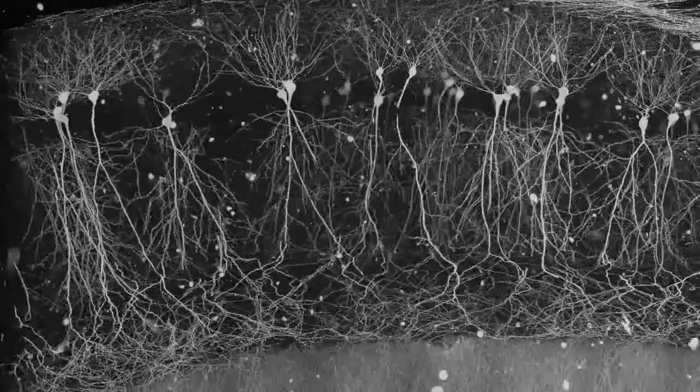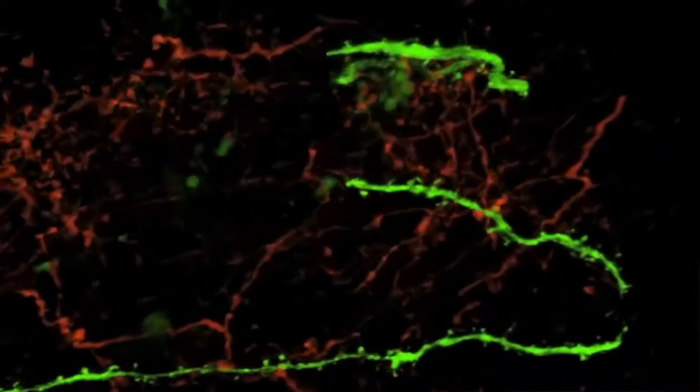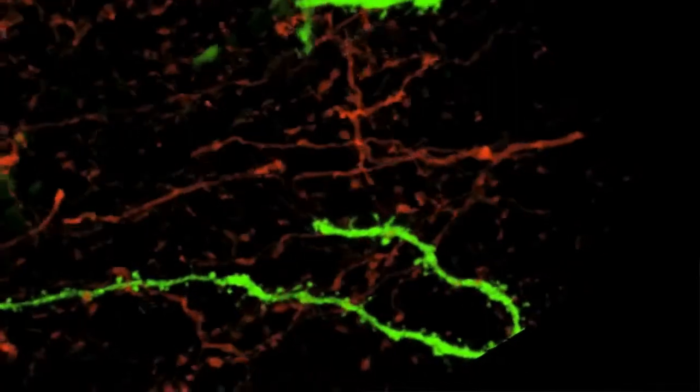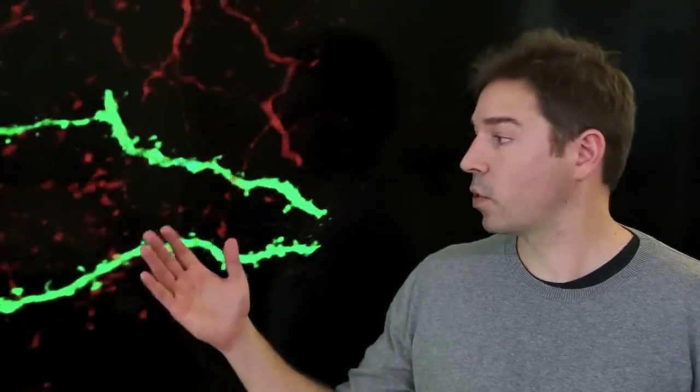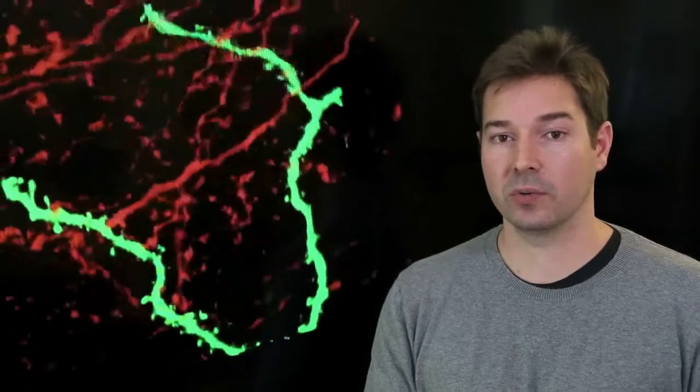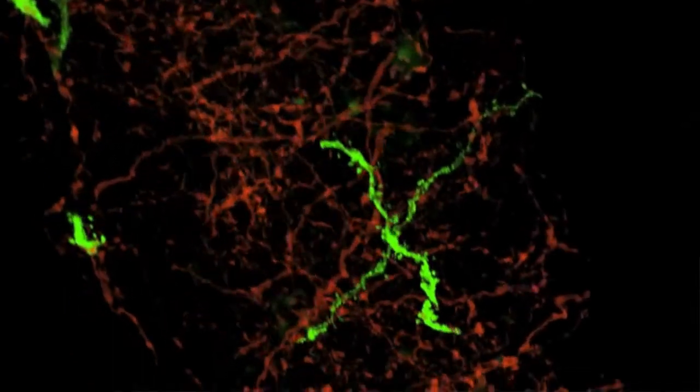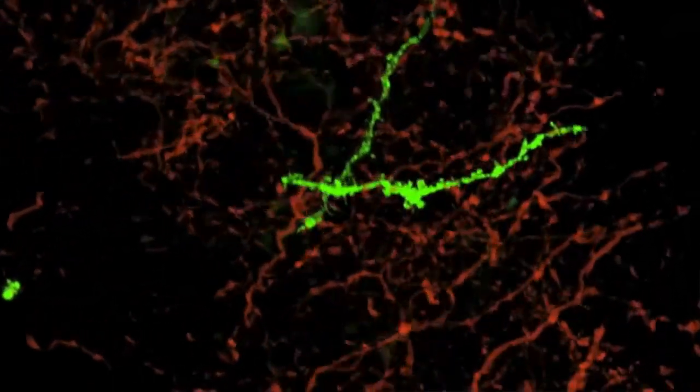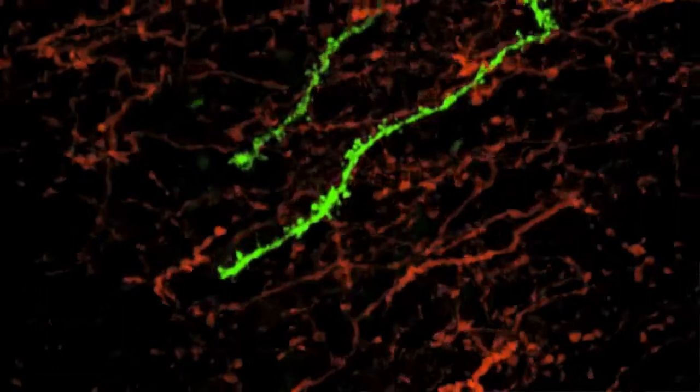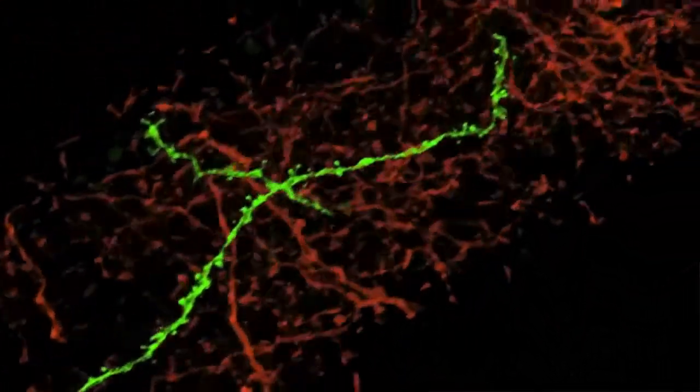So in terms of the analysis of our array tomography data, we first broke the dendritic tree into specific domains and branch types. And what you're looking at here is a movie with pyramidal cell dendrites in green. These are terminal tuft branches and the corresponding axons from a specific set of interneurons shown in red. And the specific question we are interested in is whether these axons contacted the branch at locations close to the branch point or close to the branch tip. What we found was that different types of interneurons prefer these locations on the branches.